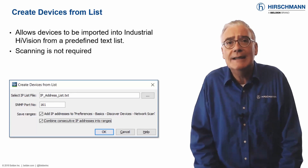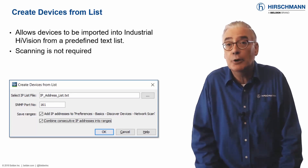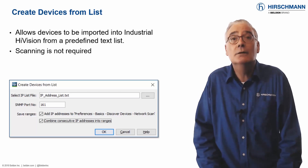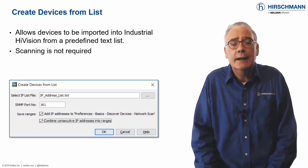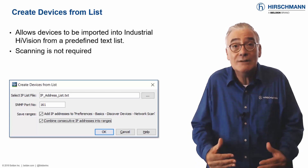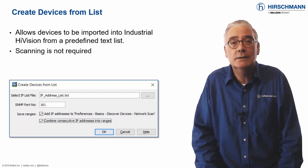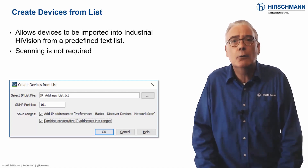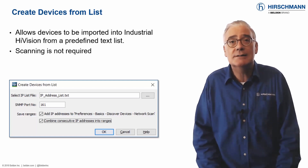In both cases, scanning address ranges becomes impractical because there are too many addresses to scan. As an alternative to scanning, it's possible to create devices by importing their IP addresses from a list. This saves you time during network deployment by scanning only the relevant IP addresses.